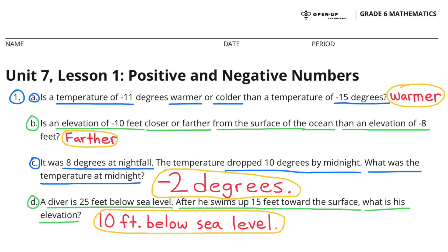A. Is a temperature of negative 11 degrees warmer or colder than a temperature of negative 15 degrees? Negative 11 degrees is warmer than negative 15 degrees.